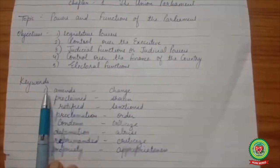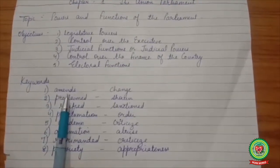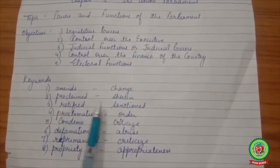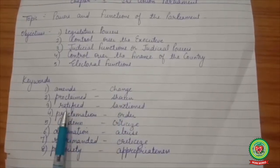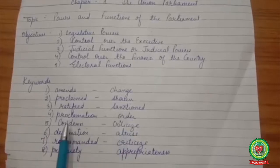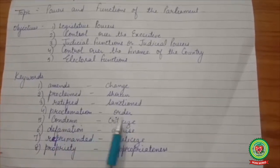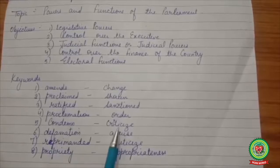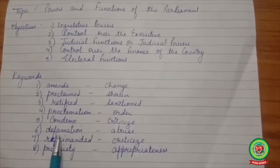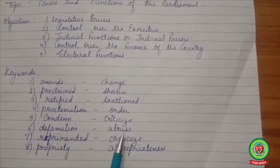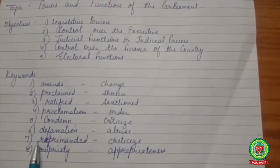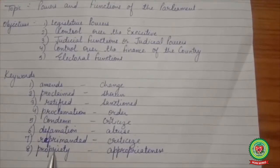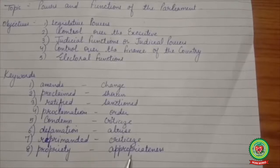Now let's discuss the keywords. 1. Amends – it means change. 2. Proclaimed – it means shown. 3. Ratified – it means sanctioned. 4. Proclamation – it means order. 5. Condemn – it means criticize. 6. Defamation – it means abuse. 7. Reprimand – it means criticize. 8. Propriety – it means appropriateness.